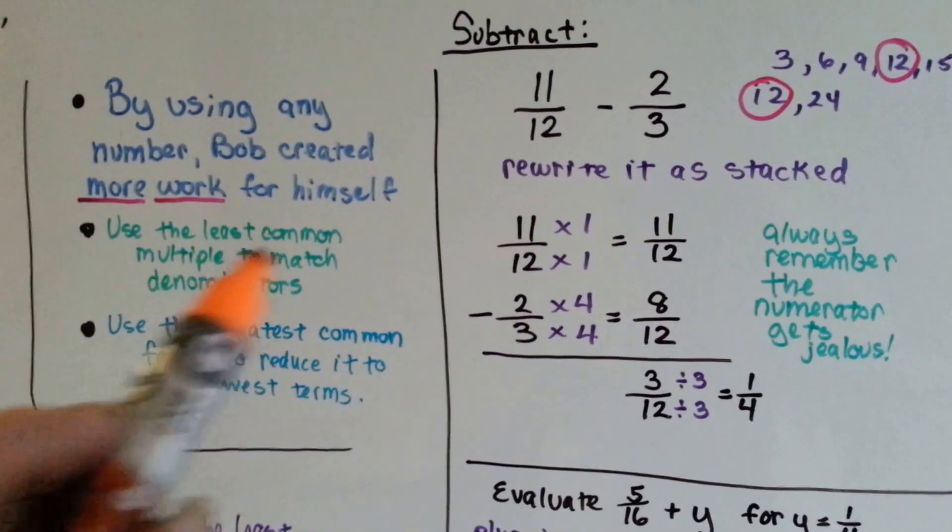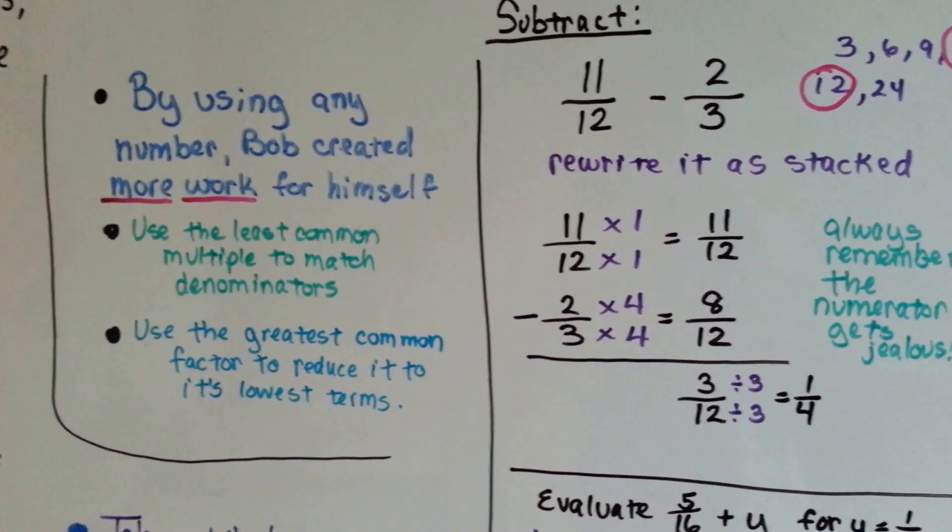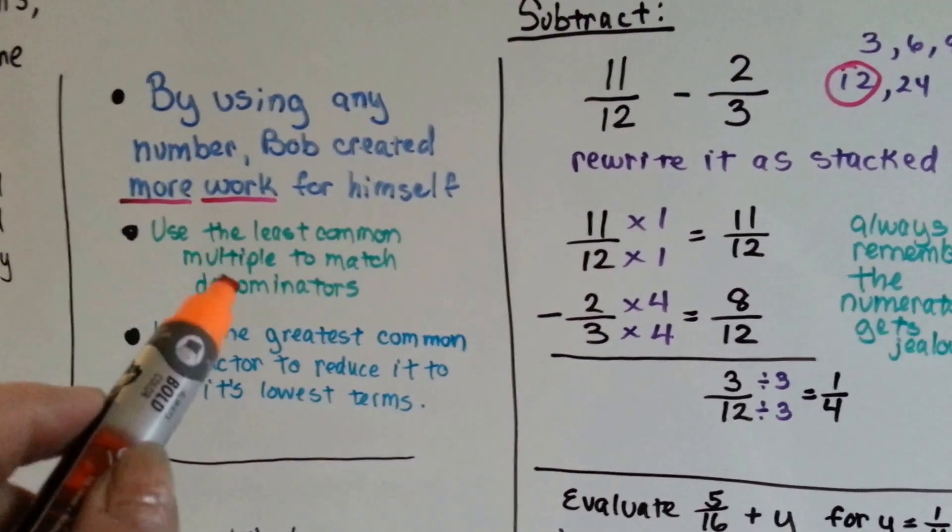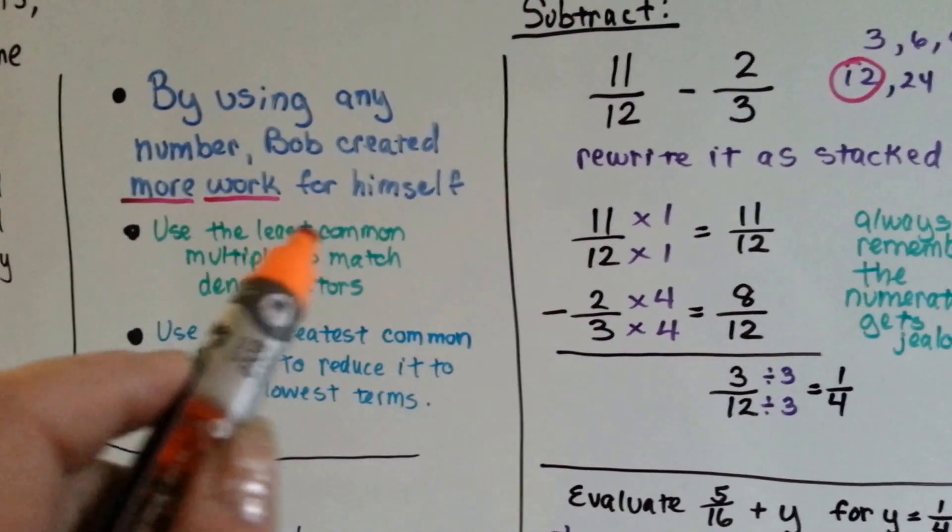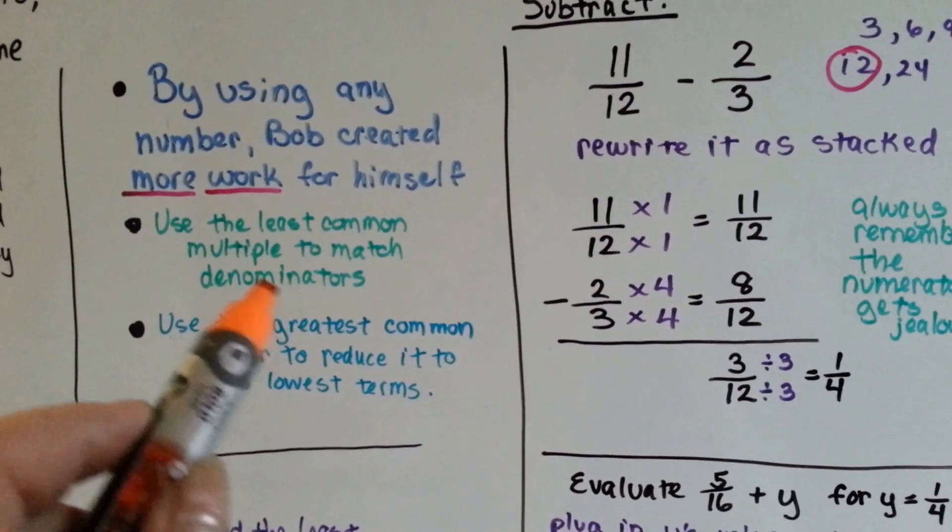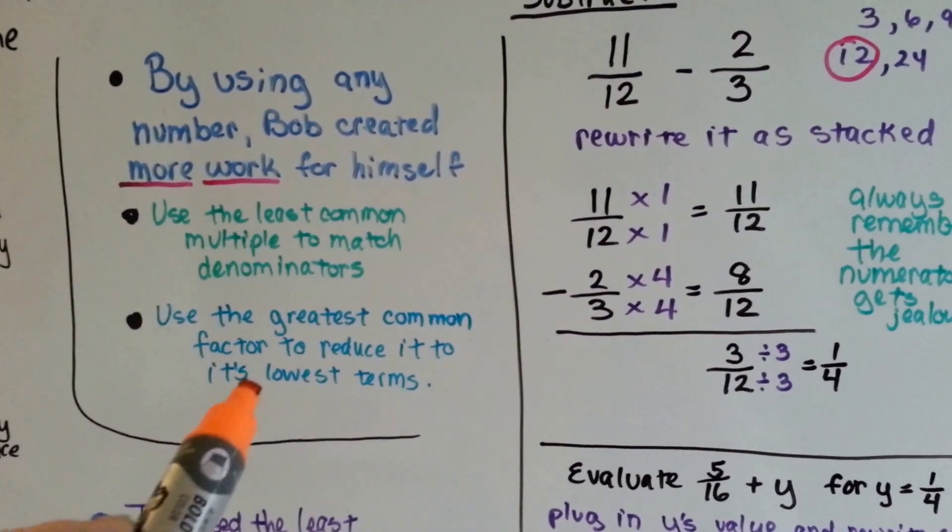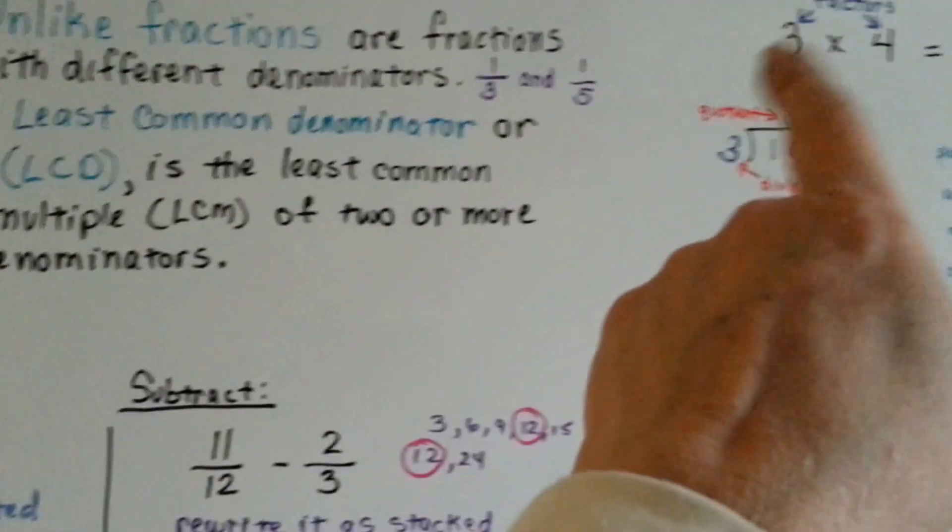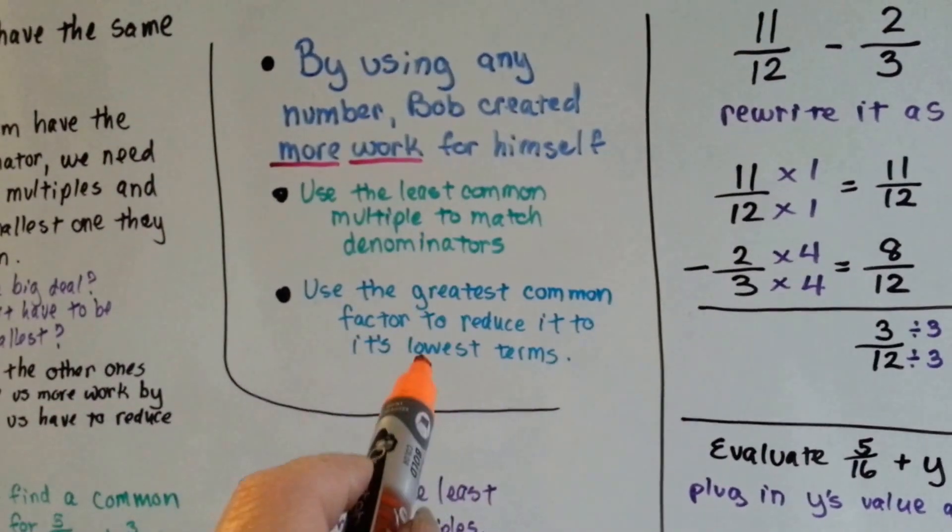And I know that these terms can become very confusing. So just think: you're going to try to find the smallest multiplication answer to match the denominators. And for the greatest common factor, just remember the factor is what you multiply together to get the multiple.